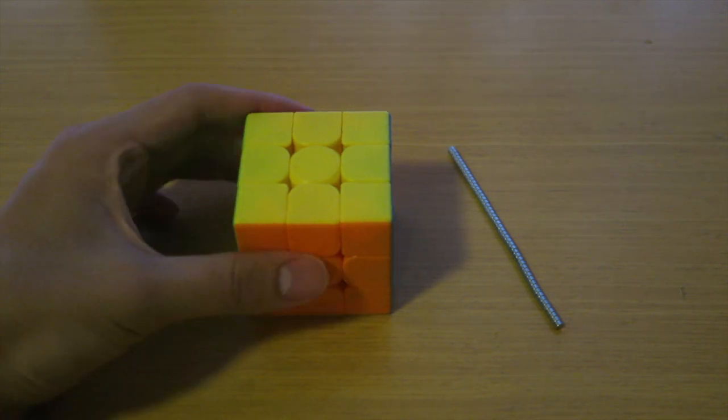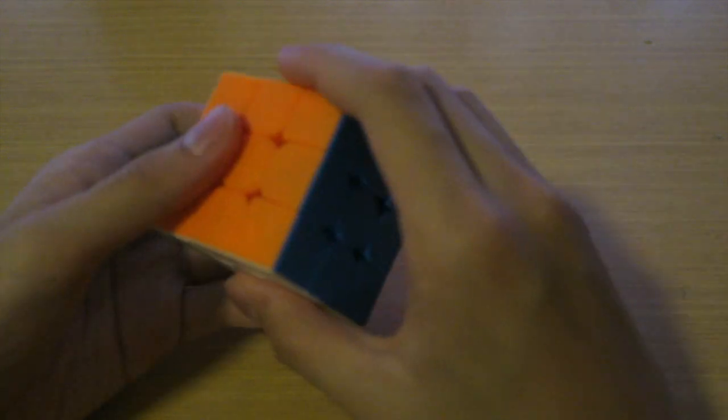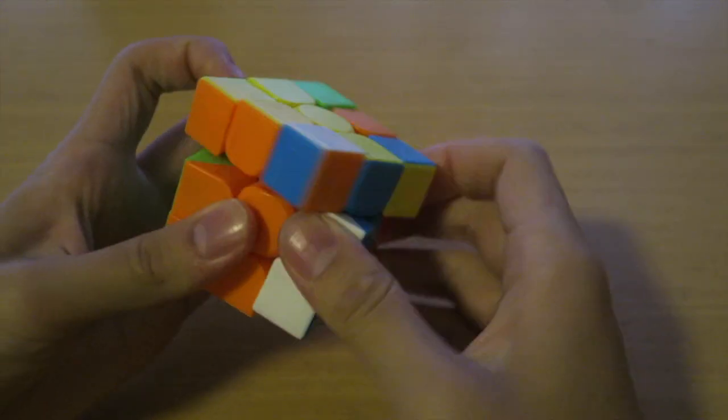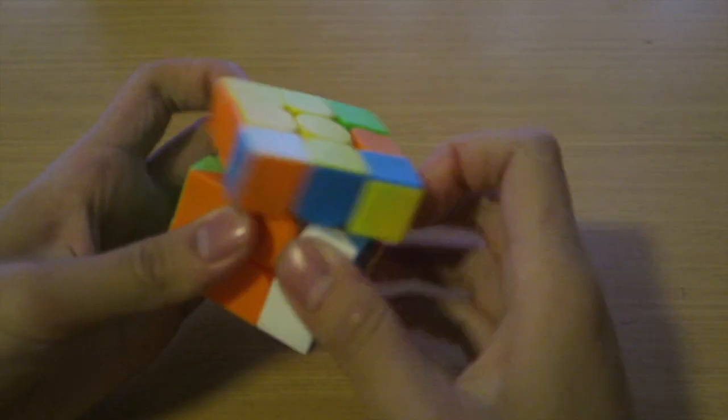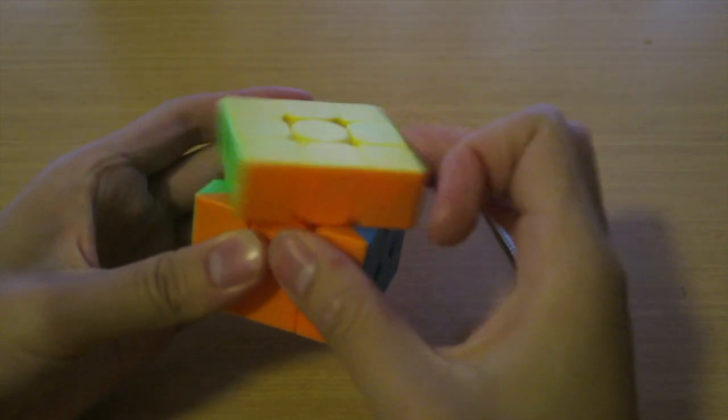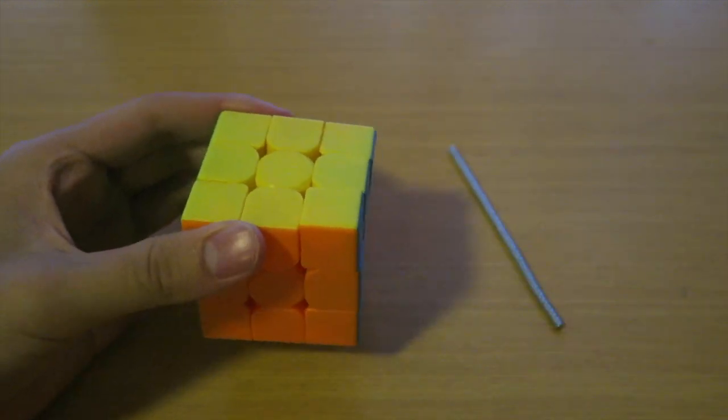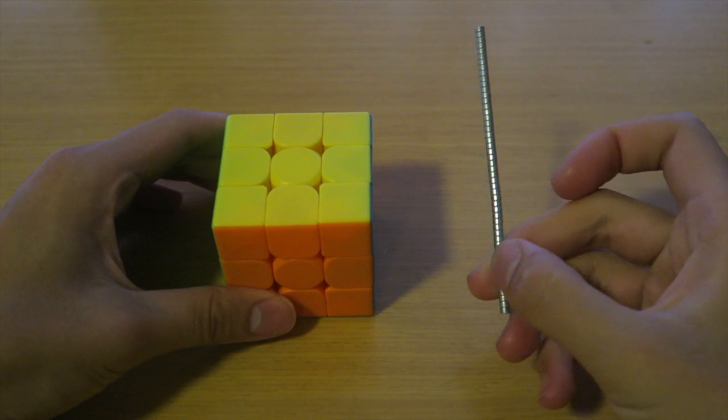The MeiLong 3x3 is one of the best budget cubes on the market right now. It's very quick and the main problem with this cube is that it's not stable, and magnets can solve this problem.